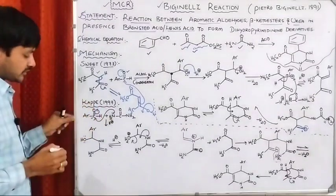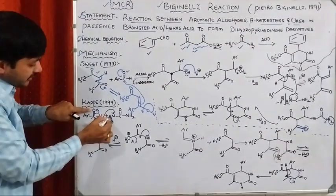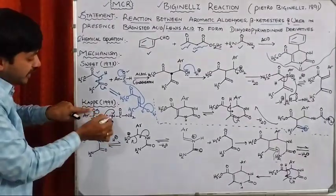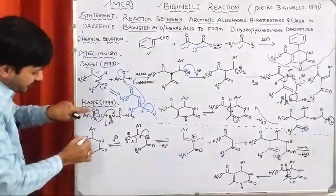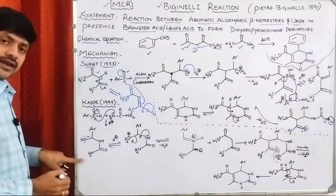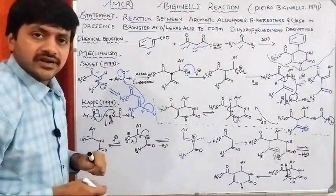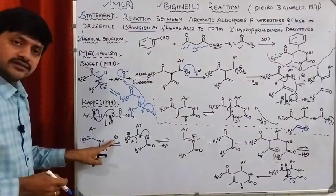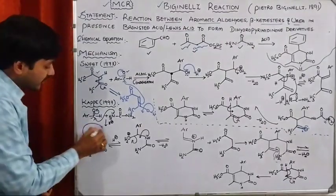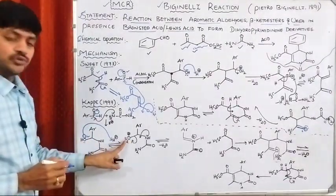Thereby, the pi-bonding electrons move towards the oxygen, and oxygen takes the negative charge. Here we are creating NH2+ on nitrogen. H is removed from nitrogen to oxygen, and we come up with OH, NH, C=O, NH2. The reaction takes place in acidic medium, so we have H+ ions in solution. Oxygen has a lone pair of electrons and donates it to the proton, creating OH2+.